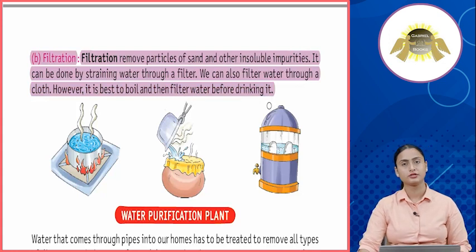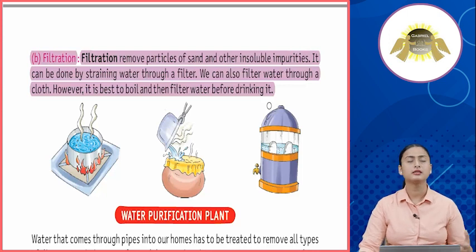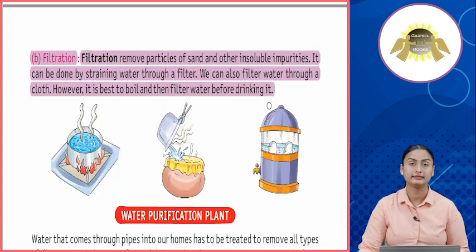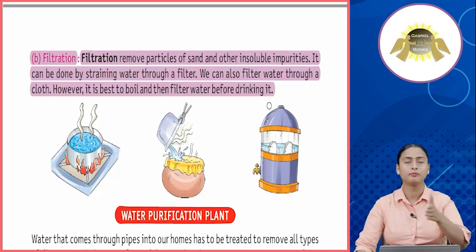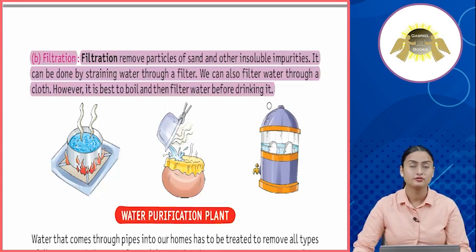Number two: filtration. Filtration removes particles of sand and other insoluble impurities; it can be done by straining water through a filter or cloth. Dousra aapka process of filtration hai — ismein filter paper use kara jata hai, jismein aapke paani ko paas karvaaya jata hai. Jitne bhi insoluble substances, jaise ki mitti, wo sare filter paper mein ruk jaate hain aur baaki ka paani fit for drinking ho jata hai.